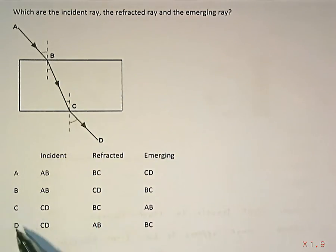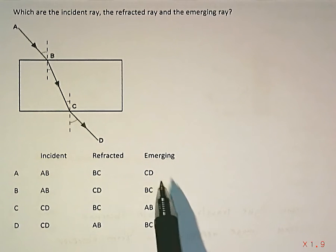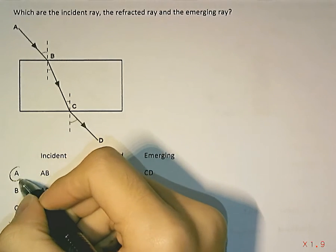So let's just put that all down into our options. Incident ray is AB, refracted ray is BC, emerging ray is CD. This is our answer.